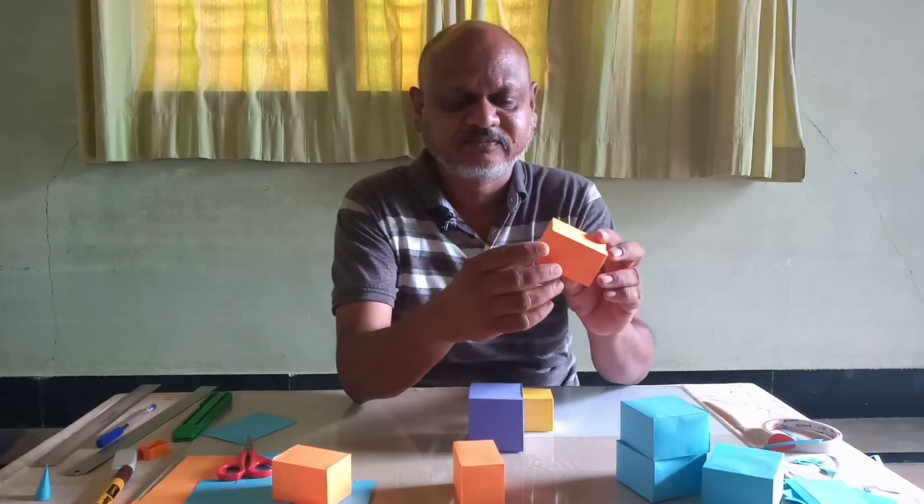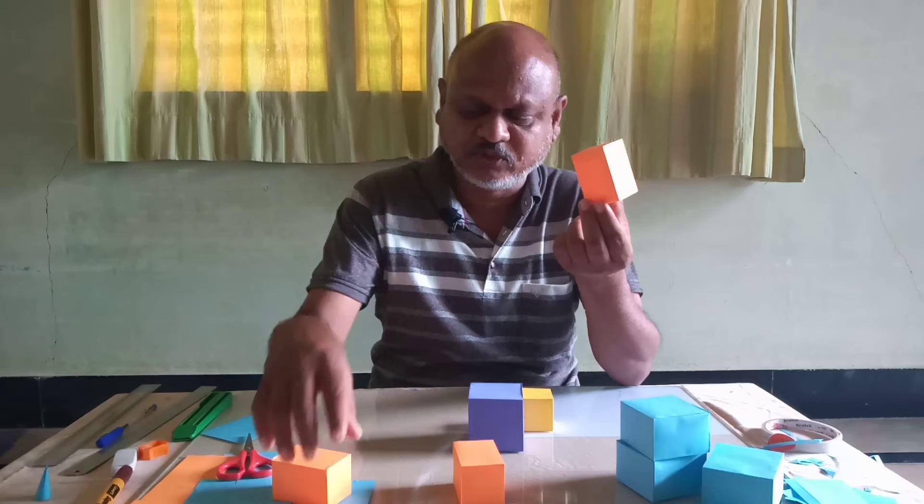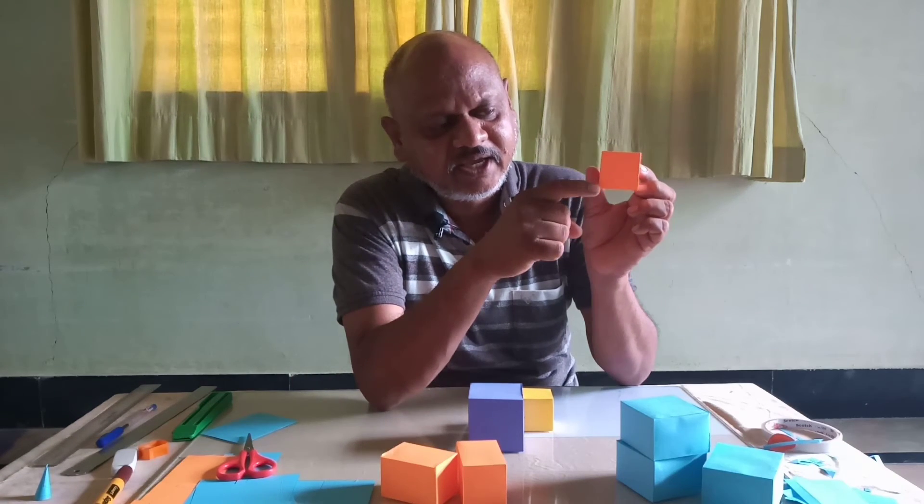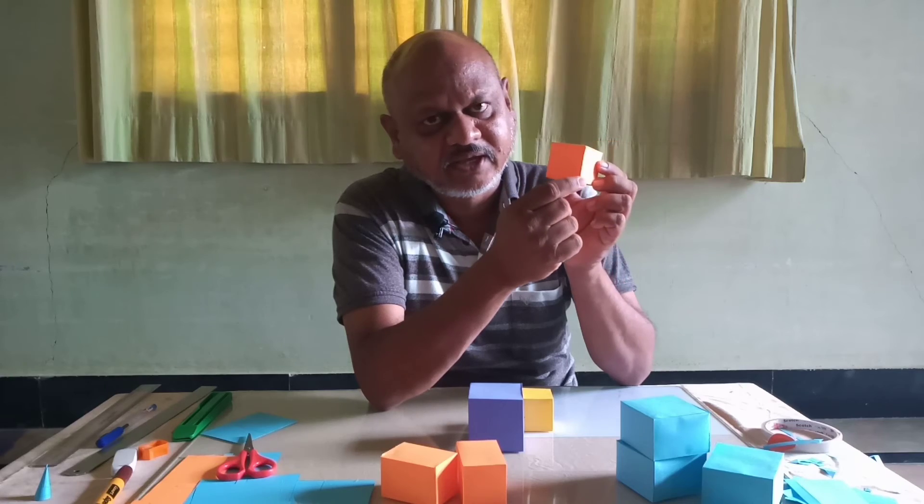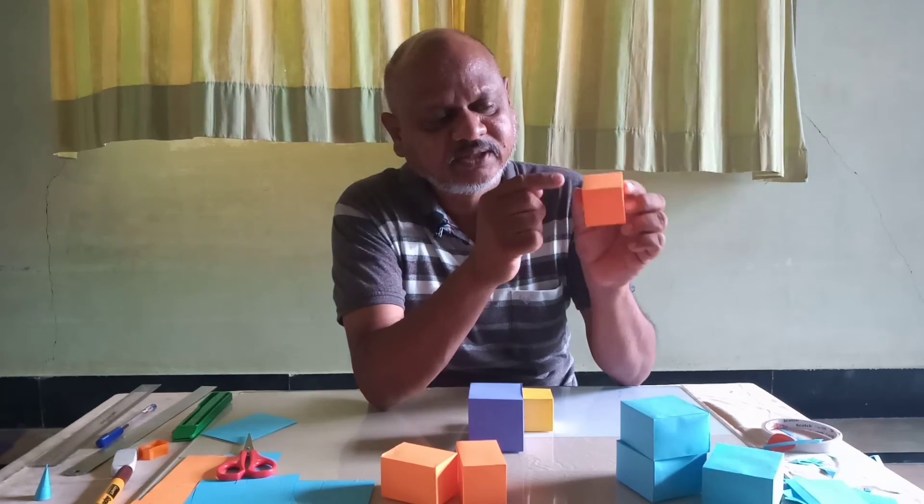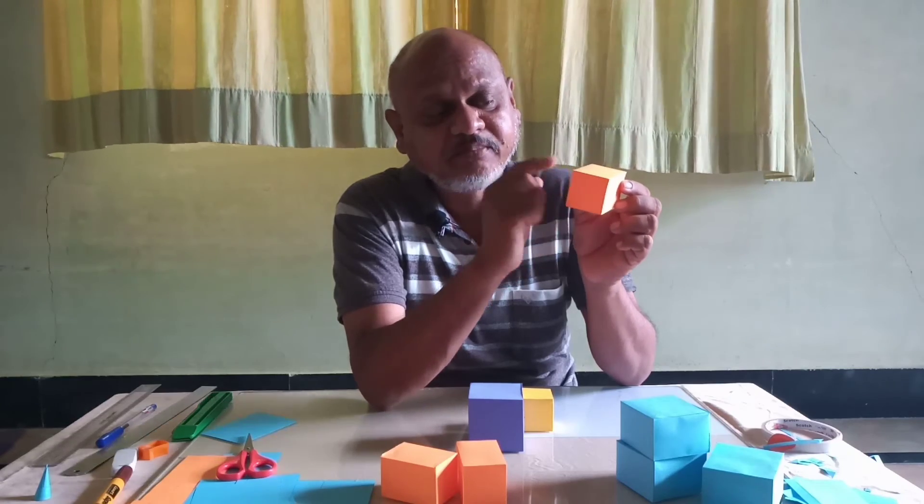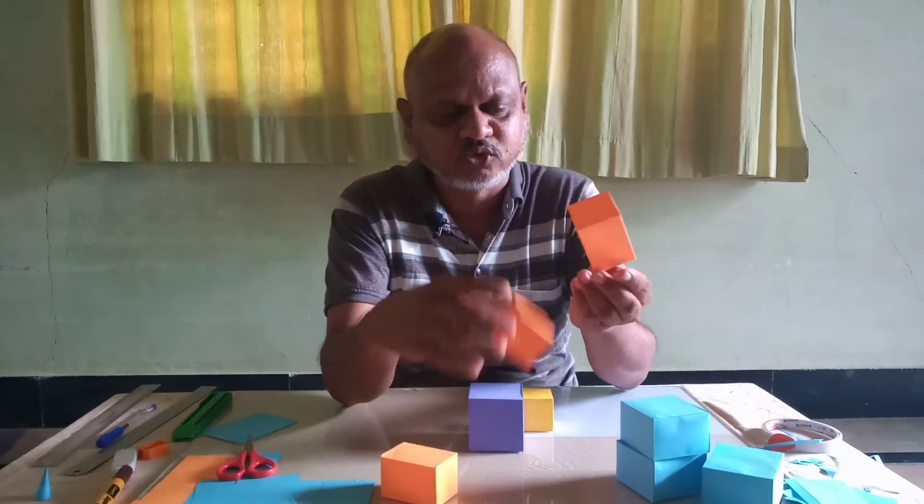So it's another cuboid. This, if you notice, this is A and this is A. So A into A is A squared, and height of this is B. So it's an A squared B cuboid, and we have three of those.